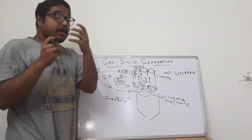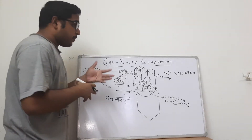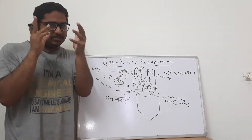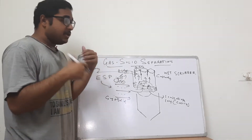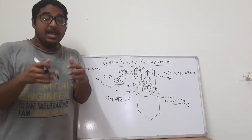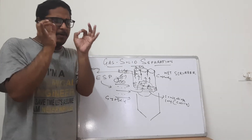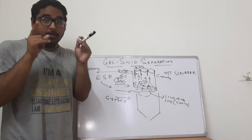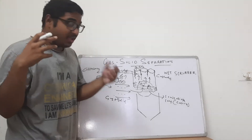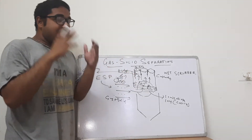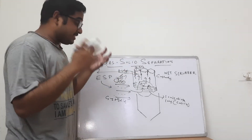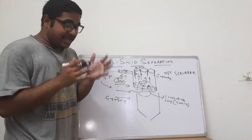Cyclone separators are used to separate relatively larger particles, whereas ESPs, wet scrubbers, and bag filters are used to separate very fine solids. The two systems we discussed earlier — bag filters and cyclone separators — handle relatively larger particles, and the two systems discussed today handle finer particles. Fine particles are trapped by this method. This is an expensive method because of the continuous electric field and the charge that needs to be maintained on the electrode surfaces.